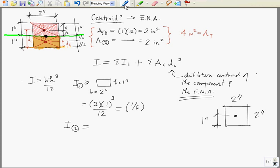I2, or the moment of inertia of this piece on the bottom. Well, it's the exact same shape as the one on top, so we know it's going to be the same answer, right? 1 sixth. So basically, we've got this term. Now we need to find the areas times the square of the distances.